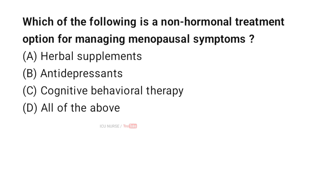Which of the following is a non-hormonal treatment option for managing menopausal symptoms? A. Herbal supplements. B. Antidepressants. C. Cognitive behavioral therapy. D. All of the above. And the correct answer is D. All of the above. Non-hormonal treatments for menopause include herbal supplements to reduce hot flashes, antidepressants for mood and symptom relief, and cognitive behavioral therapy to manage stress and emotions.